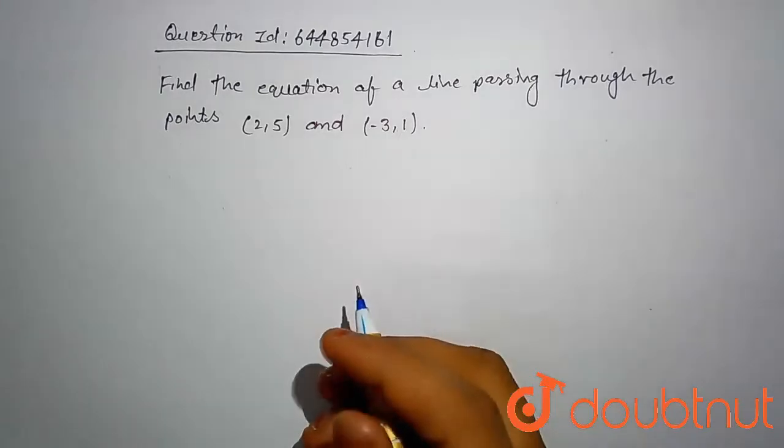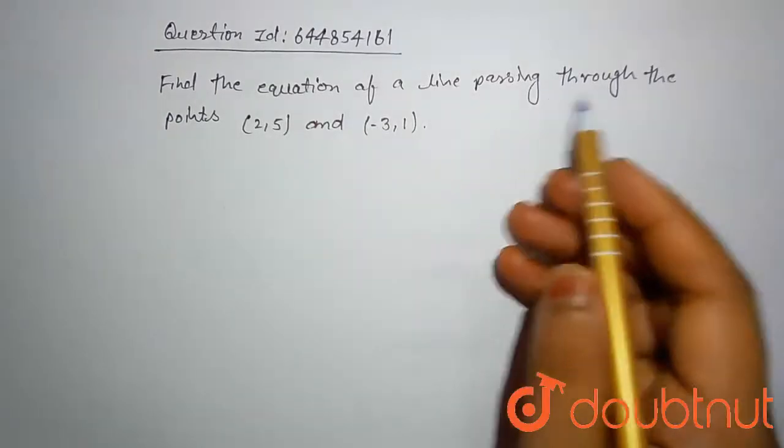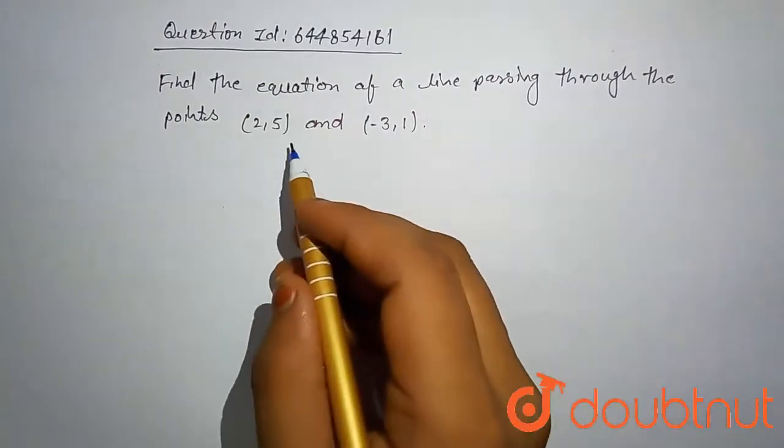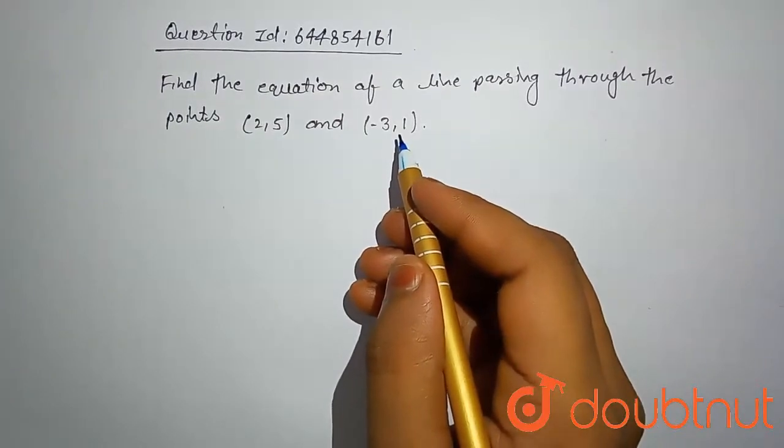Hello friends, today our problem is find the equation of a line passing through the points (2,5) and (-3,1).